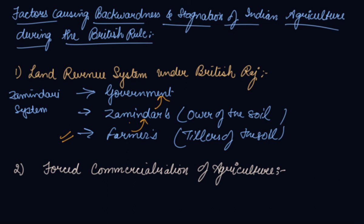What the Britishers did was force the farmers to cultivate commercial crops like indigo, which the British government could export to Britain and earn money through exports. So agriculture became more commercialized, apart from the normal subsistence crops like rice and wheat.